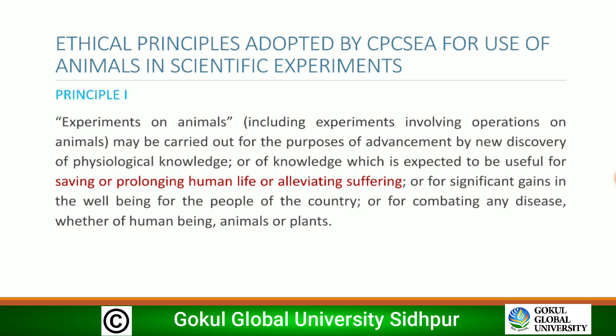The ethical principles adopted by CPCSEA for use of animals in scientific experiments: Principle 1 states that experiments on animals, including those involving operations, may be carried out for the advancement of physiological knowledge, or knowledge useful for saving or prolonging human life, alleviating suffering, or for significant gains in the well-being of people, or for combating any disease whether of human beings, animals, or plants.